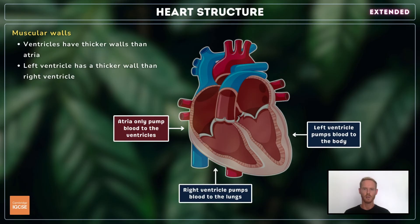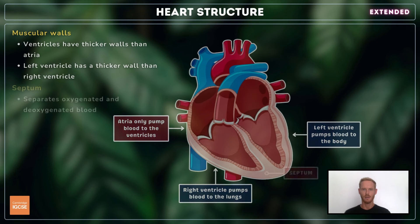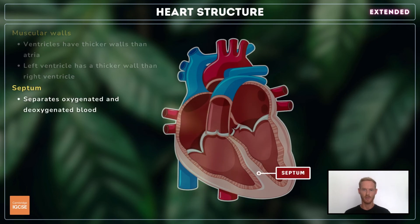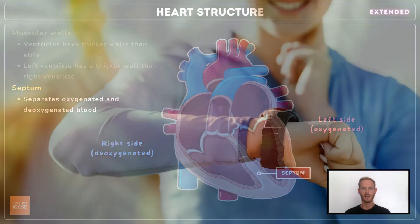The muscular walls of the ventricles are thicker and stronger than those of the atria, as they pump blood over much greater distances and therefore need to generate more pressure. The left ventricle delivers blood to all the major organs, so has a thicker wall than the right ventricle, which only pumps blood to the lungs and back. The septum divides the two sides of the heart, and its role is to prevent deoxygenated blood on the right side from mixing with oxygenated blood on the left.